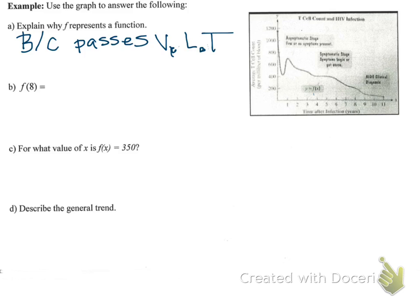For letter B, they want us to evaluate the function when x equals 8. So this means x equals 8, they want to know what y equals. So when x equals 8, I draw a line straight up, and then notice we go over. So we would say y equals 200, or you could say f of 8, which is the more proper way, equals 200.